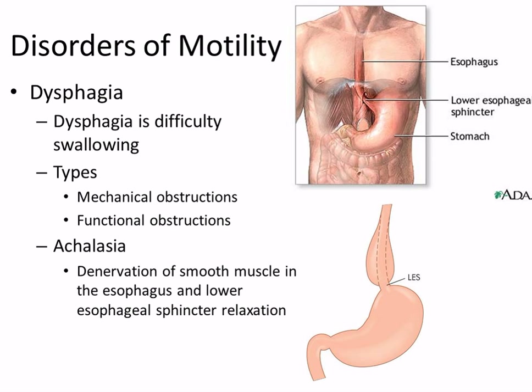Moving to the organs: the first is the esophagus — above it are the mouth and pharynx. The first problem is dysphagia — with a G (phage), not SH like in the brain context. Dysphagia with SH refers to language; dysphagia with G means dysfunctional swallowing. Phage, like macrophage, means 'to eat,' so dysphagia means difficulty swallowing.